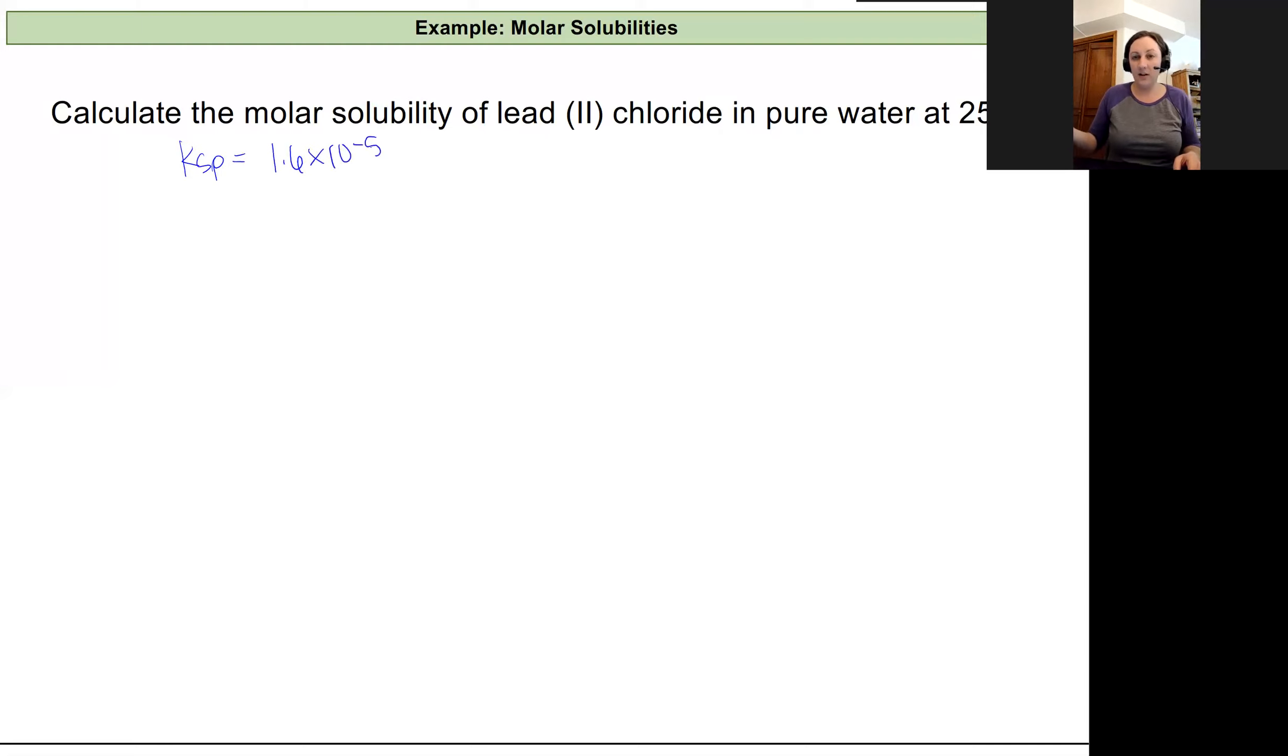And the reaction that we're looking at is lead chloride, PbCl2, which is a solid, and the equilibrium of that solid dissolving and recrystallizing. So that gives us Pb²⁺, which will be aqueous, and two of our chloride ions. And that's coming from that molar ratio right here.